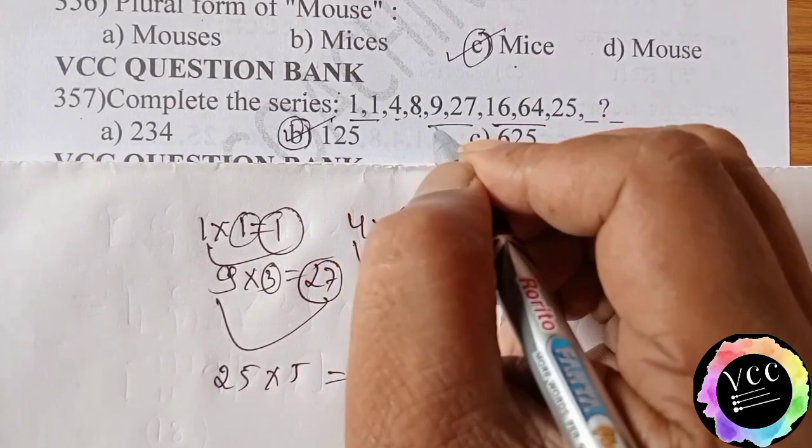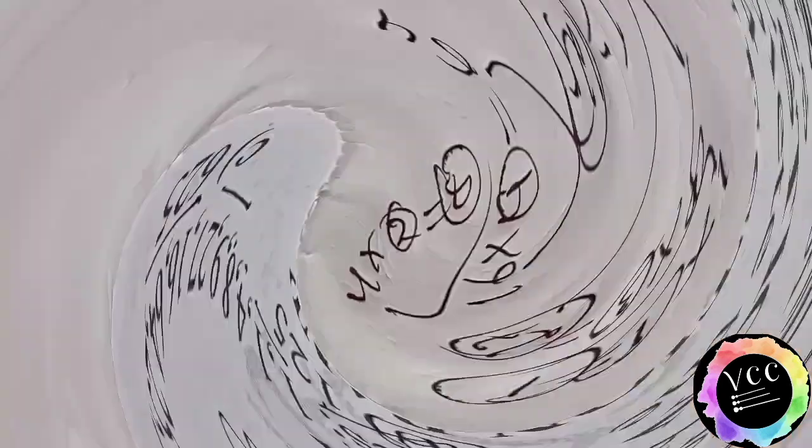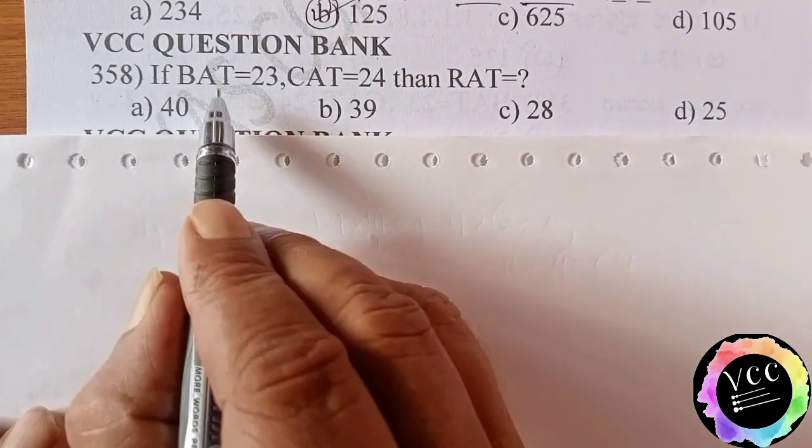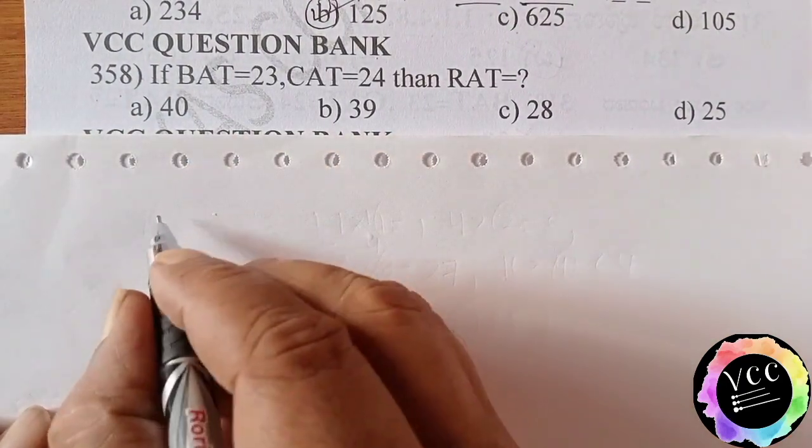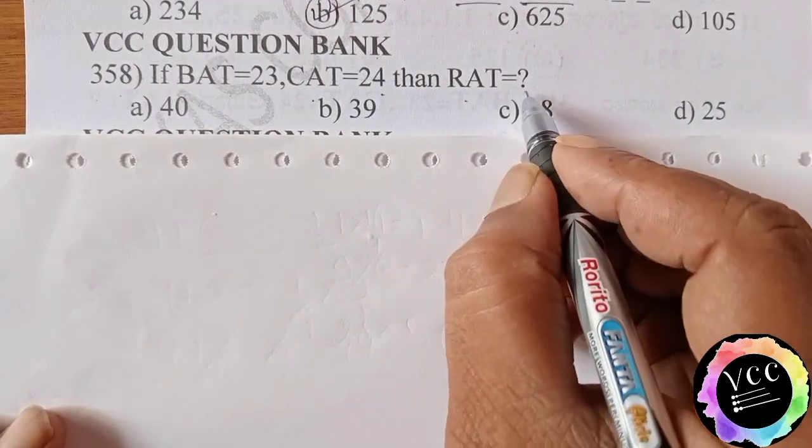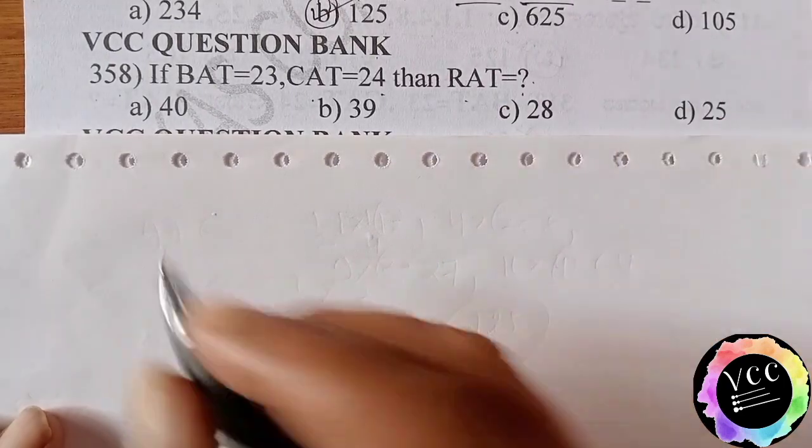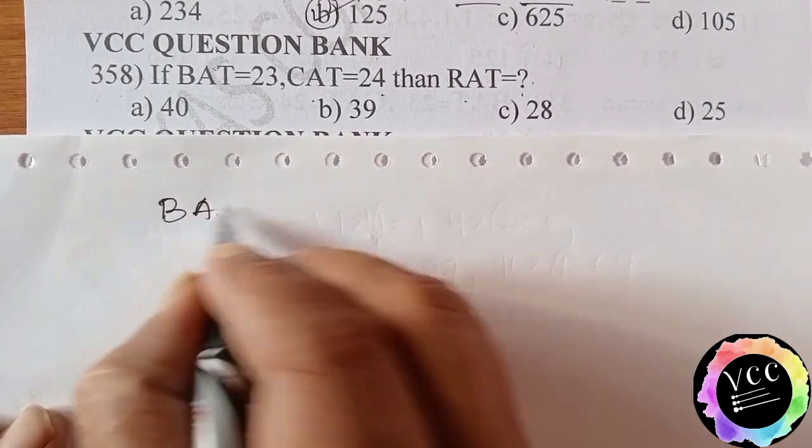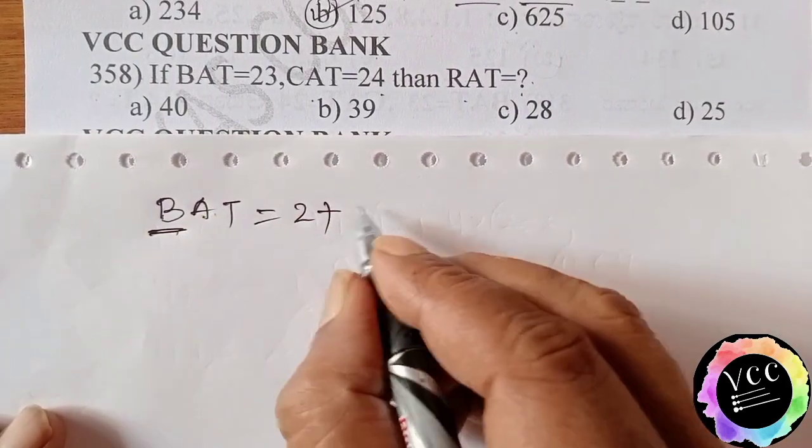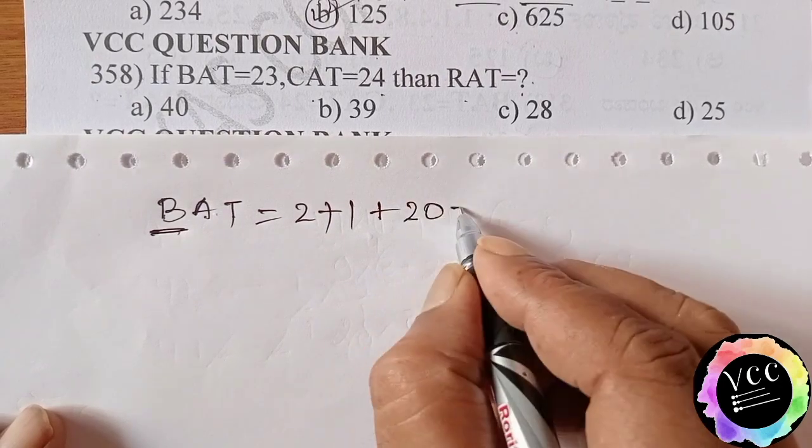VCC question bank 358. If BAT equal to 23, CAT equal to 24, RAT equal to question mark, we should find the answer for RAT. Here BAT means its order is alphabetic order. B is 2 and A alphabetic order is 1 and T alphabetic order is 20. Here sum is 23, so that's why 23 came, students.